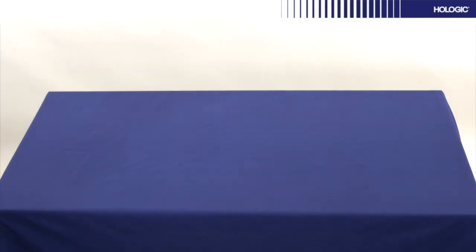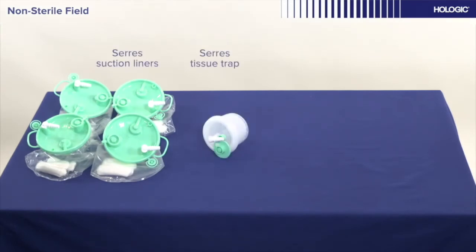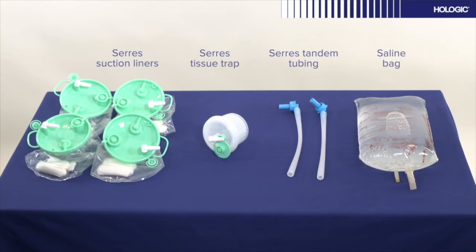The following consumable items are required for the procedure in the non-sterile field: four Ceris Suction Liners, one Ceris Tissue Trap, two Ceris Tandem Tubing, and a bag of saline, preferably 3 liters.